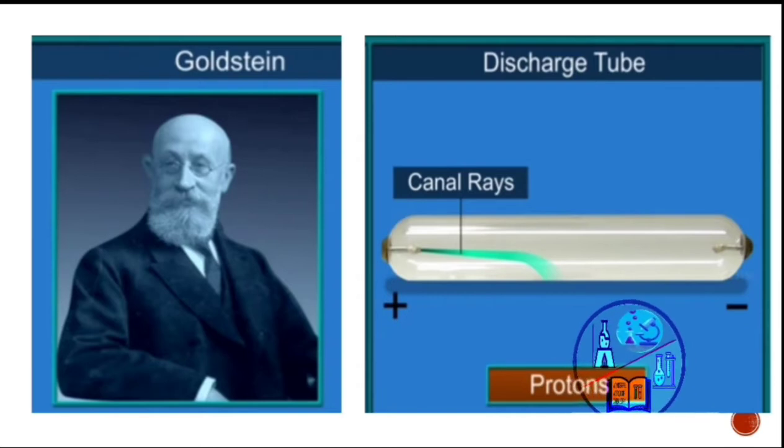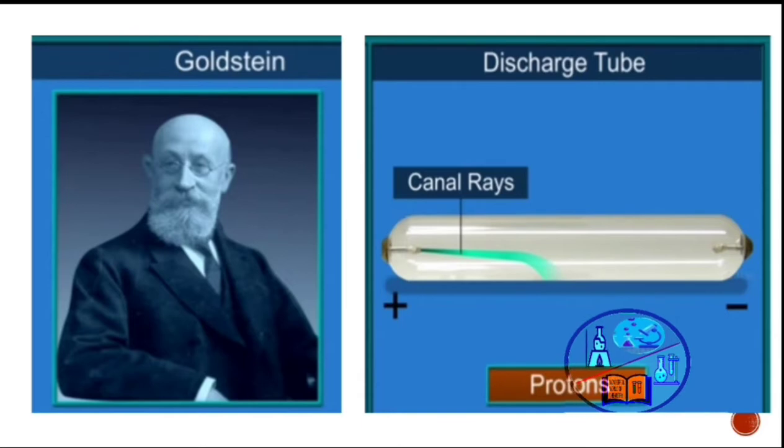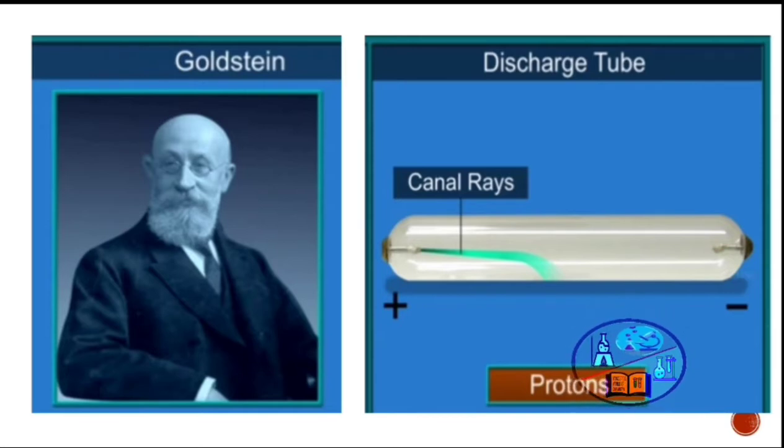These discoveries made the scientists believe that an atom was divisible and made up of electrons and protons. But they didn't know how these protons and electrons were arranged within an atom.